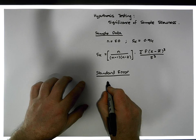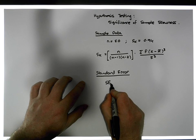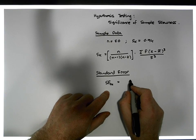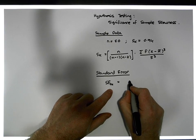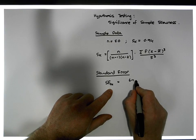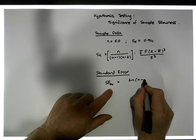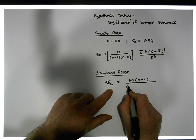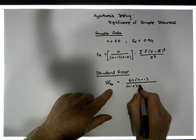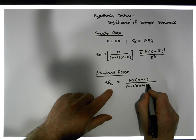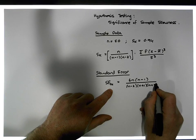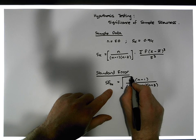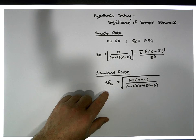The standard error for skewness is based on the sample size. It equals the square root of [6n(n−1)] / [(n−2)(n+1)(n+3)]. So to calculate the standard error for the distribution, all we need to know is the sample size.